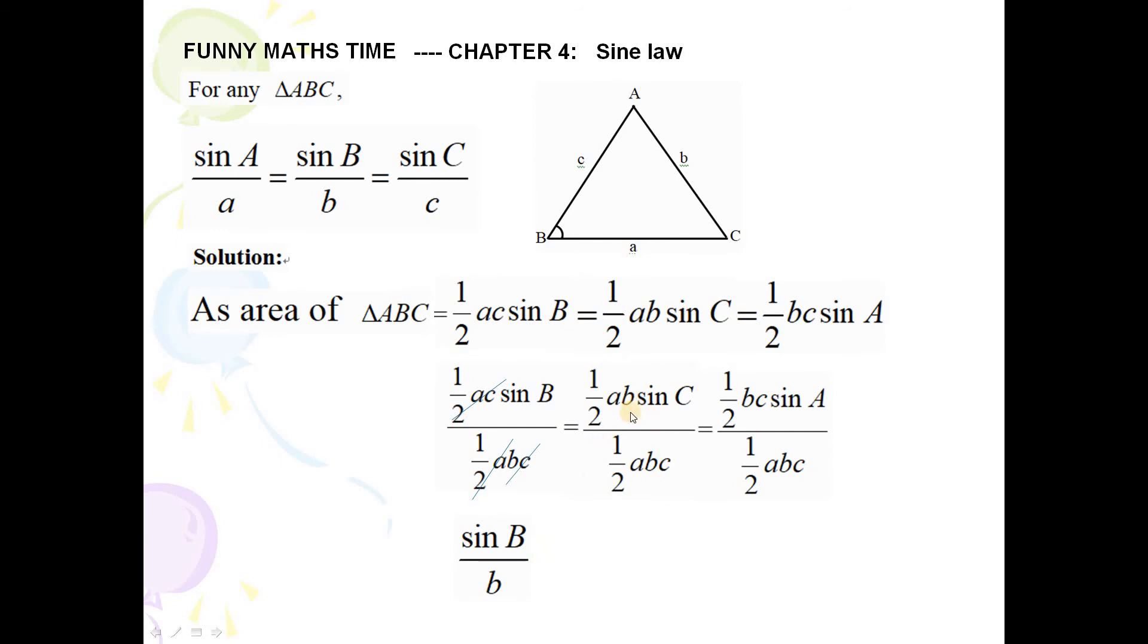And for the second equation, we can see that 1 over 2 ABC can be cancelled. Okay, see? Yes, we can see this. And then for the last one.